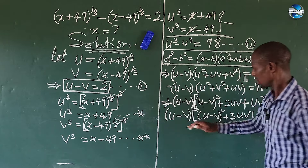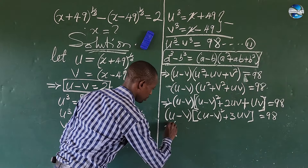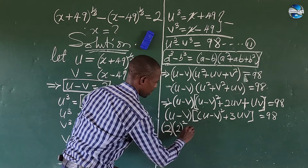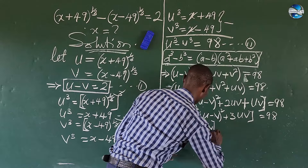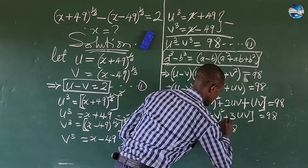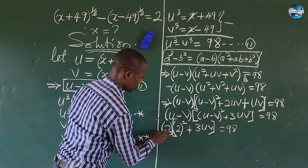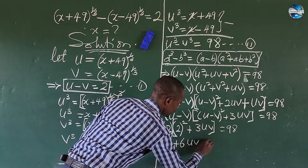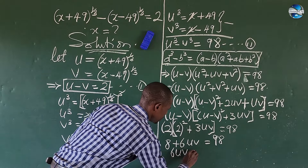We substitute u − v = 2 into this expression. So we have 2 × [2² + 3uv] = 98, which gives us 2 × [4 + 3uv] = 98. Expanding: 8 + 6uv = 98.